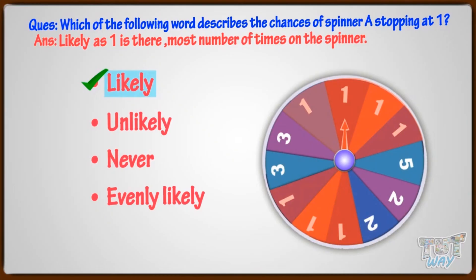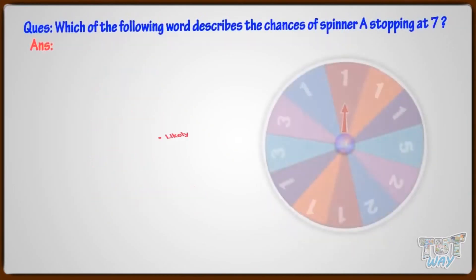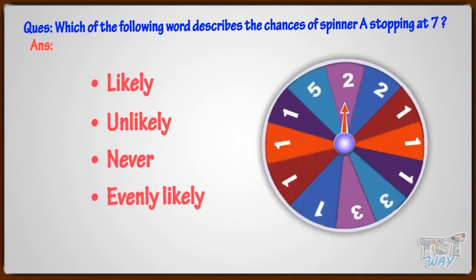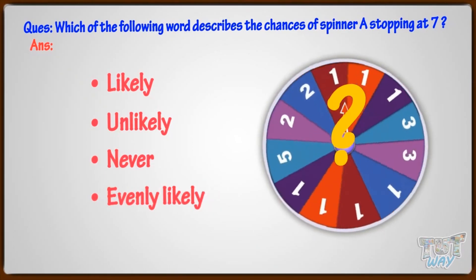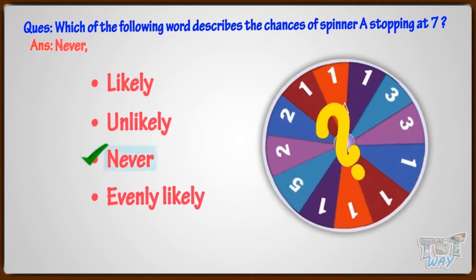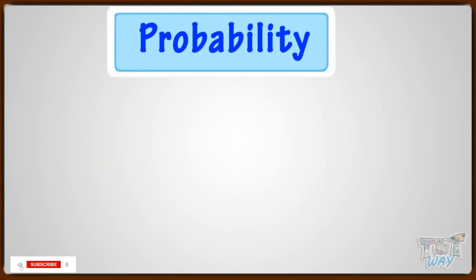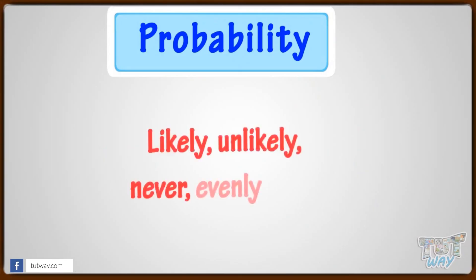Now, which of the following word describes the chances of spinner A stopping at 7? It's never, as 7 is not there on the spinner. So, there is no chance that the spinner will stop at 7. Okay, kids. So, today we learned about probability and various words we can use to describe probability.